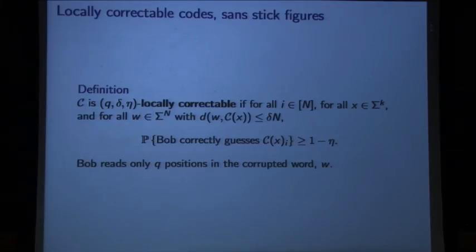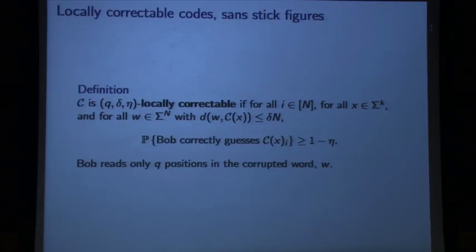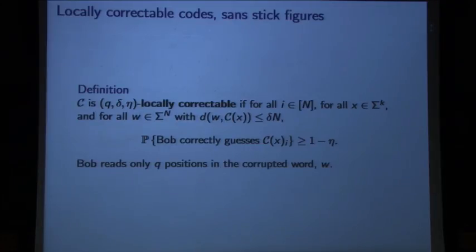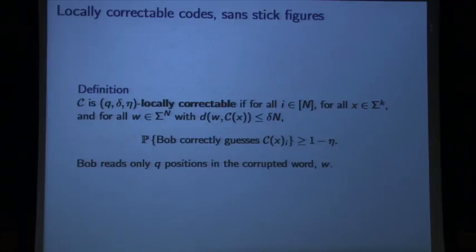Here's the formal definition: for every index in the uncorrupted code word, for every possible message, and for every possible corrupted code word w where the corruptions corrupt no more than a delta fraction of the code word, Bob should be able to get his index i correctly with some constant probability close to 1. The locality, or query complexity, will always be q. Through this talk, we'll allow the channel to put out a delta fraction of errors adversarially — a constant fraction — and we'll focus on the rate and the query complexity.